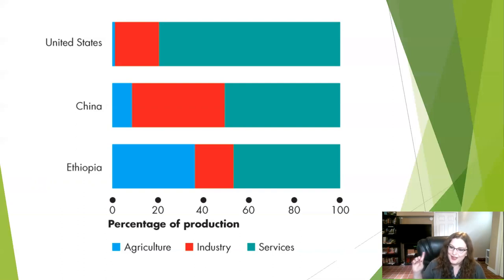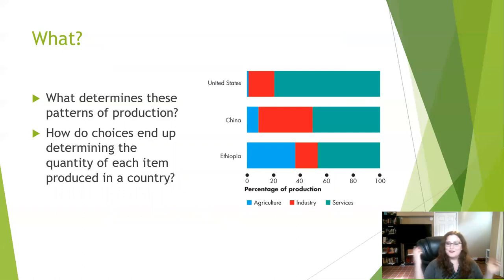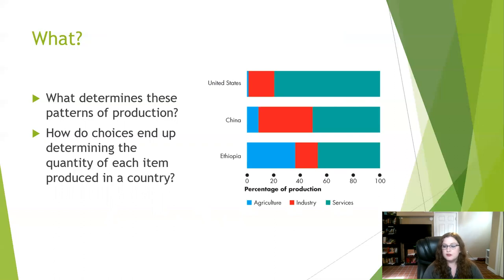There's so many different questions we ask in economics to figure out why some places are different. Different's not bad — but why and how and for what purpose? What determines these patterns of production? Why is the US very service-based? Why is Ethiopia more agricultural-based? How do choices end up determining the quantity of each item produced in a country? There are incentives in these countries — incentives to have a service sector, incentives to produce more food when you have a good climate for it. People make choices between those incentives, and we study that. That is economics!